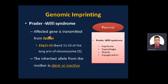Genomic imprinting is very interesting: if the mutated gene is transmitted from the father, it gives a different disease than if transmitted from the mother, even though it is the same mutated gene. For example, in Prader-Willi syndrome, the affected gene is transmitted from the father. The affected gene is located at band 11.13 on the long arm of chromosome 15. The inherited allele from the mother is silent or inactive. Prader-Willi presents with hypotonia after birth, failure to thrive initially, then hyperphagia, obesity, small hands and feet, and hypogonadism and intellectual disability.